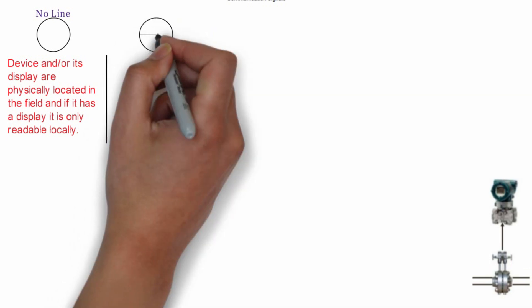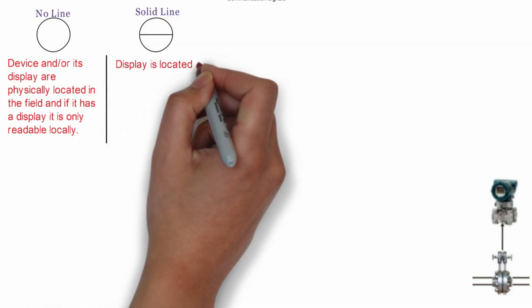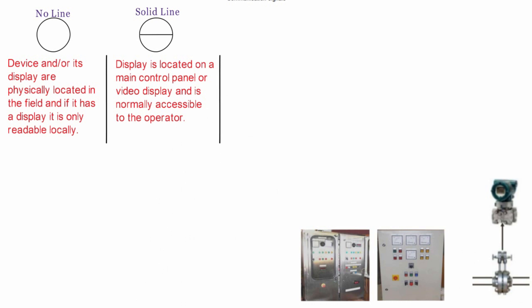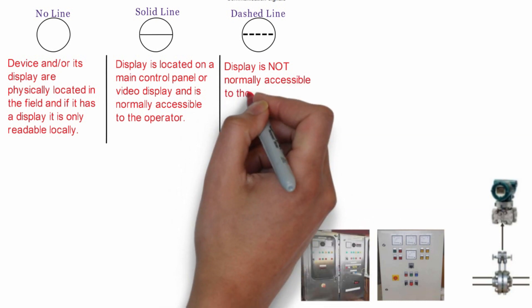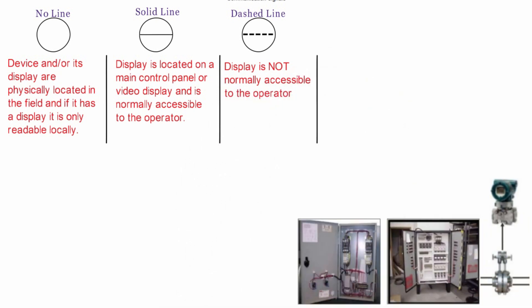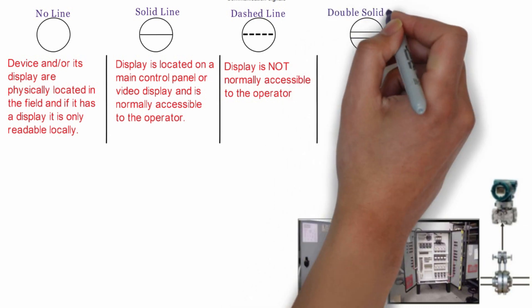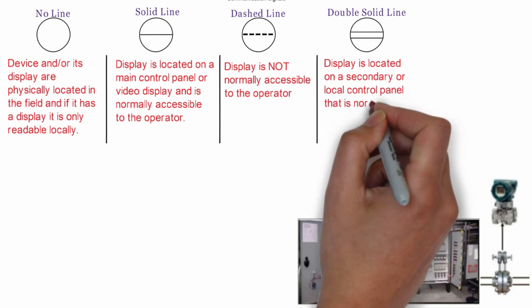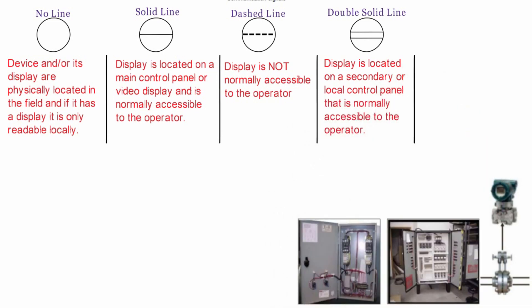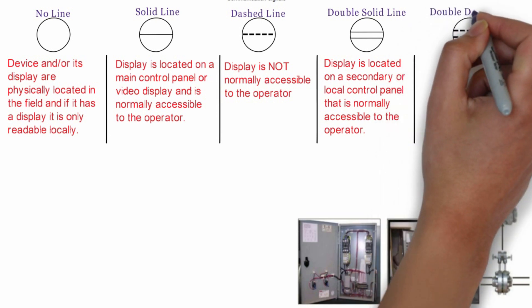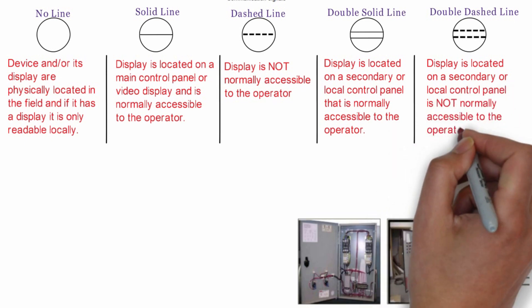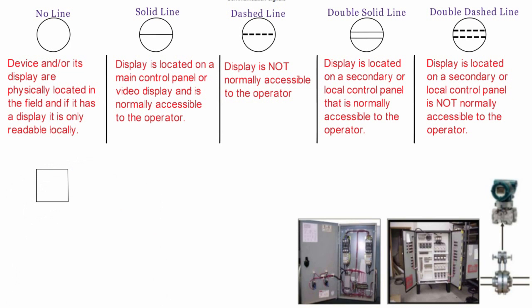A solid line in the bubble means that the display is located on a main control panel or video display and is normally accessible to the operator. A dashed line in a circle means that the display is not normally accessible to the operator. A double solid line in the circle means that the display is located on a secondary or local control panel that is normally accessible to the operator. A double dashed line means that the display is located in a secondary control panel and is not normally accessible to the operator.